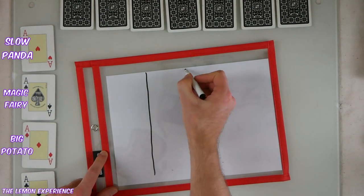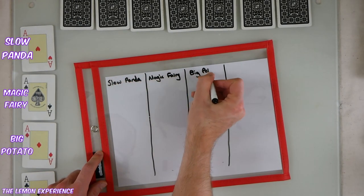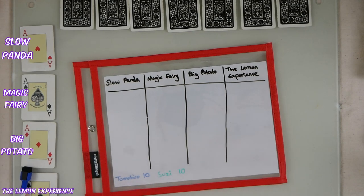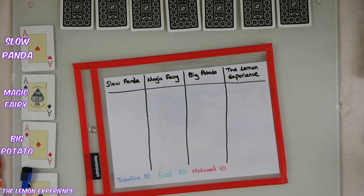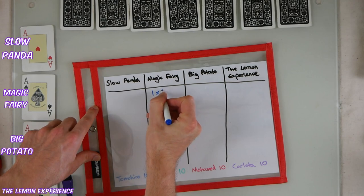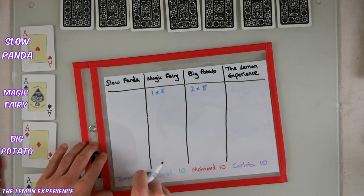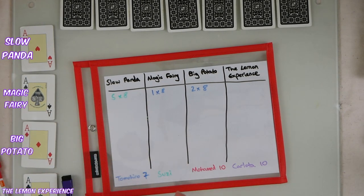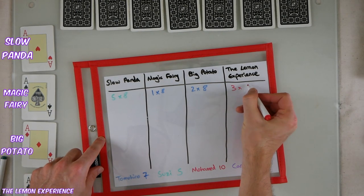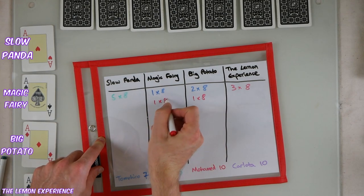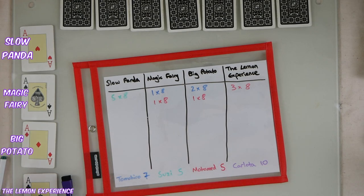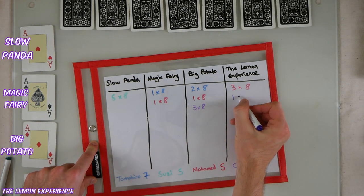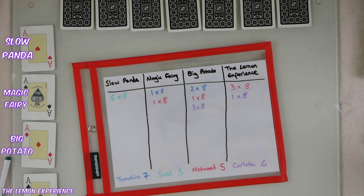If you want to play the betting version, get a piece of paper and divide it into four columns, one for each horse. I'm using a dry erase whiteboard. Write the names of the horses at the top. For this version you need four teams or individuals — in our example we have Tomohiro, Susie, Mohamed, and Carlotta. Everybody starts with ten points, and at the beginning of the race they can choose to bet some of their points on the horses. There's no limit — they can bet all of their points on one horse right at the start, but they don't have to spend it all. Later in the race they'll have opportunities to bet more at slightly worse odds. At the beginning all horses have odds of eight, meaning if someone bets one point on a horse and it wins, they get eight points back. Write all the bets on the betting sheet, using colors to indicate each player, along with the amount bet and the odds at that time. Remember to deduct the points from their total at the bottom.